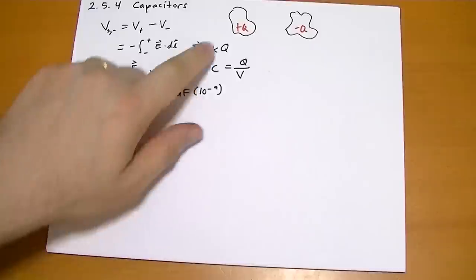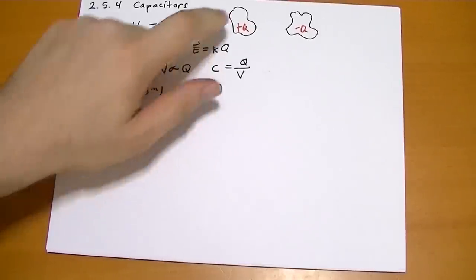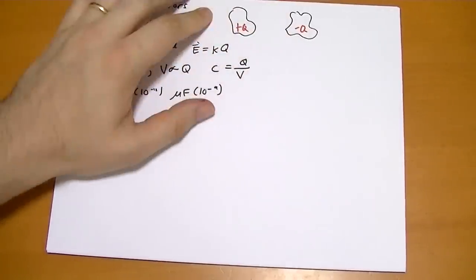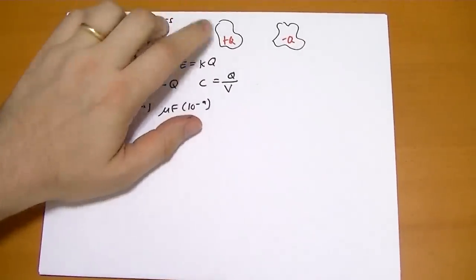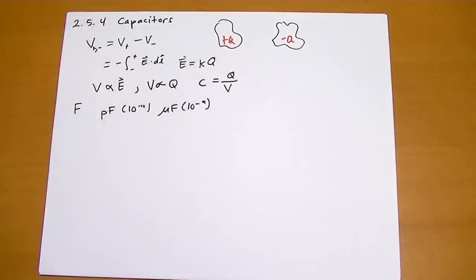Notice that for the charge here for this equation, we're not counting the total charge, because the total charge always is going to be zero in this problem. We're counting only the charge on the positive plate.